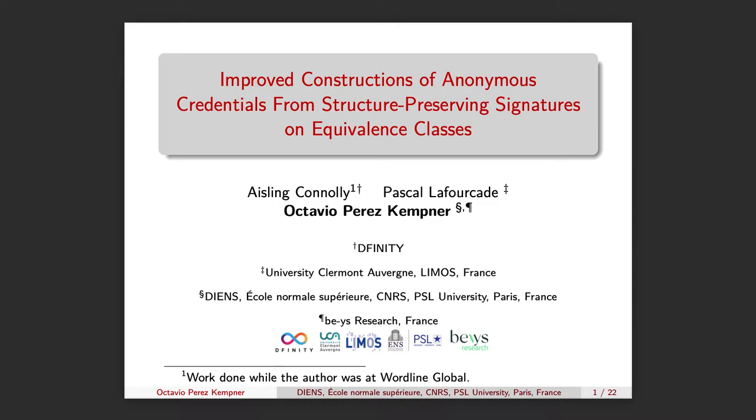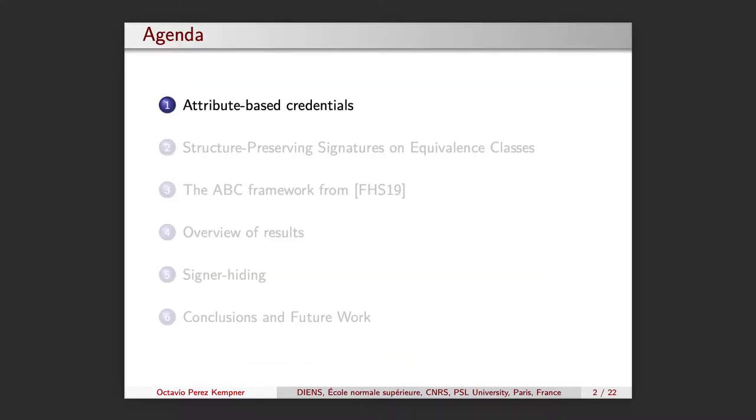Hello, I'm Octavio Perez-Kempner and I will be presenting the paper Improved Constructions of Anonymous Credentials from Structure-Preserving Signatures on Equivalent Classes. This is a joint work with Aisling Connolly and Pascal Lafourcade. I will start by introducing the concept of attribute-based credentials and the main motivation of our work.